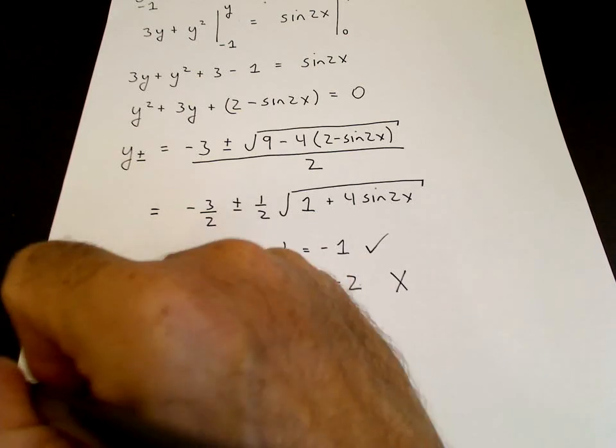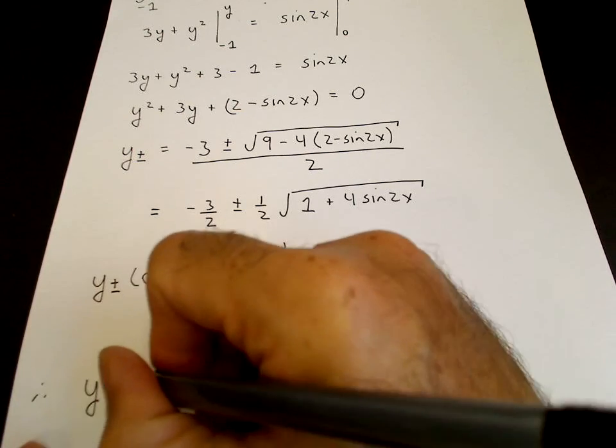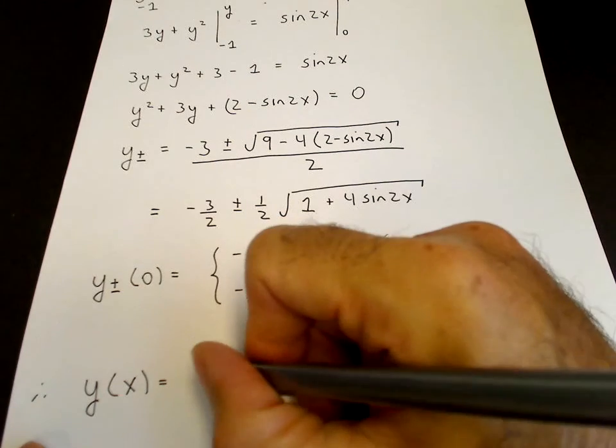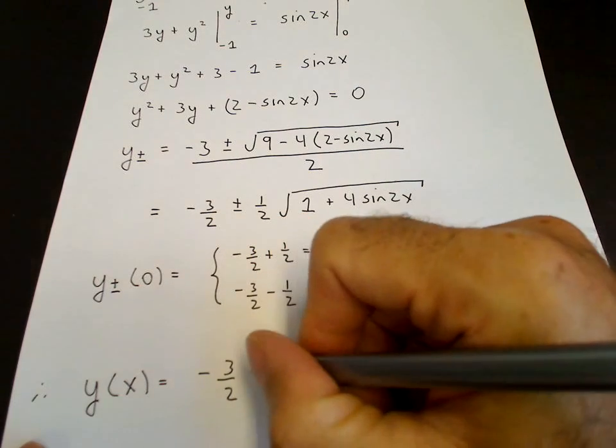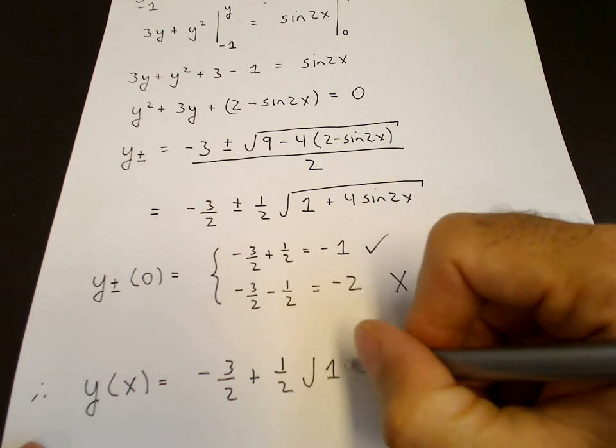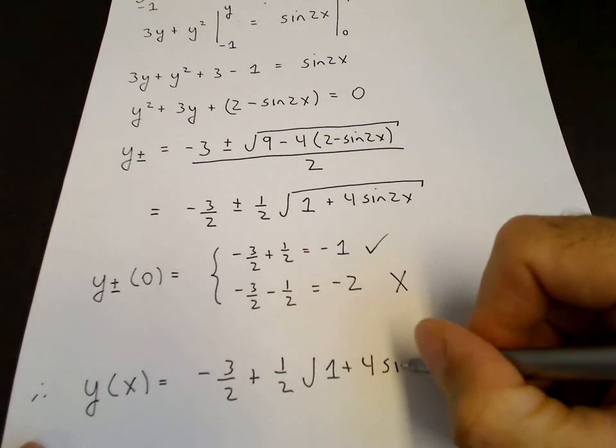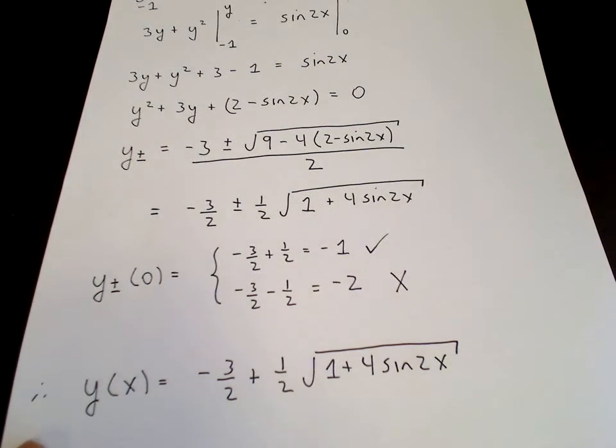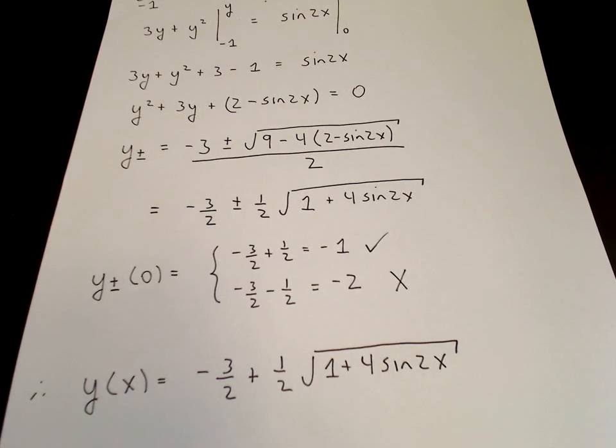So we then have the solution, so we write the solution. So therefore, y of x is the plus root, so it's minus 3 halves plus 1 half root 1 plus 4 sine 2 x. And that's the solution.